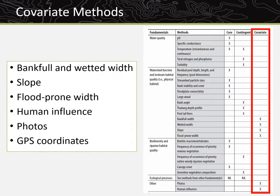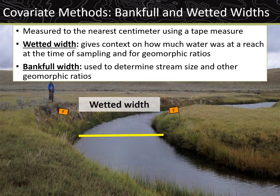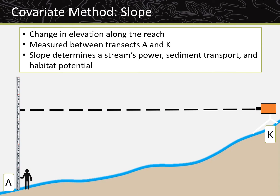The covariate methods, which are used to assist in interpreting other collected Lotic AIM data, are bankful and wetted width, slope, flood prone width, human influence, photos, and GPS coordinates. Wetted and bankful width are both measured to the nearest centimeter using a tape measure. Wetted width measurements give context on how much water was at a reach at the time of sampling relative to the width of the bankful channel, giving indications of habitat availability, hydrologic alteration, and drought. Bankful width measurements are used to determine stream size and other geomorphic width to depth ratios.